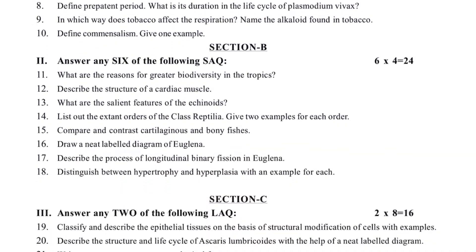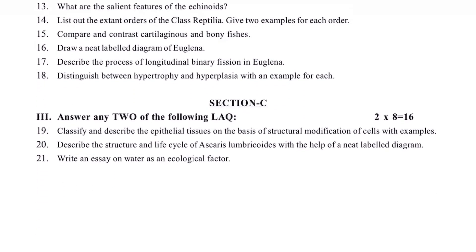It covers Reptiles — the first class order including cartilaginous and bony fish measurements. There are many differences in cartilaginous versus bony fish. There are also topics related to Euglena diagrams, longitudinal binary fission, and the Ascaris life cycle, as well as water or J-shaped growth.